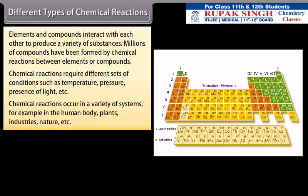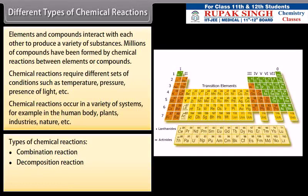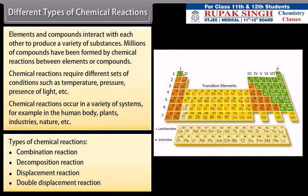Chemical reactions occur in a variety of systems, for example, in the human body, plants, industries, nature, etc. Types of chemical reactions: Combination reaction, decomposition reaction, displacement reactions, double displacement reactions.